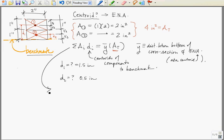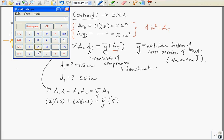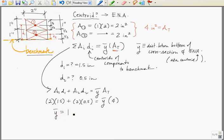So, let's plug into our equation. A1 d1 plus A2 d2 equals y bar area total. 2 inches squared times 1.5 inches plus 2 inches squared times 0.5 inches equals y bar times total area, which we've computed as 4 inches. 2 times 1.5 equals 3 plus 2 times 1 half, that's 1, equals 4. And now we're going to divide both sides of the equation by 4. And we get y bar equals 1 inch.